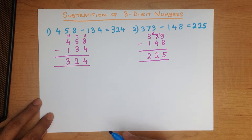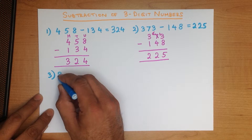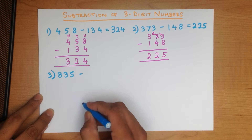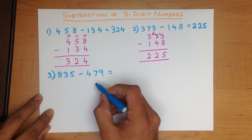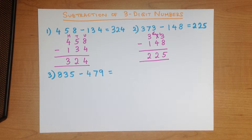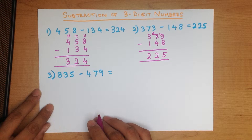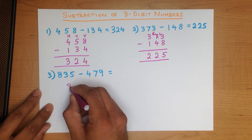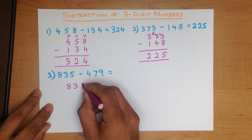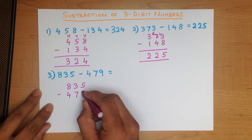Now let's work through an example which is a little bit more difficult. What is 835 minus 479? It looks a little bit more difficult, doesn't it? Well, the first step — let's write the numbers down in the vertical format: 835 minus 479.